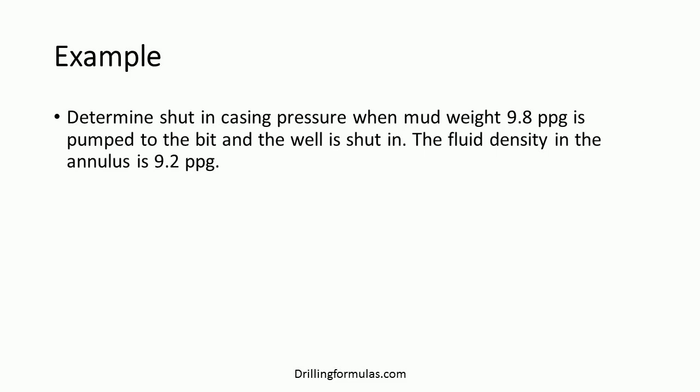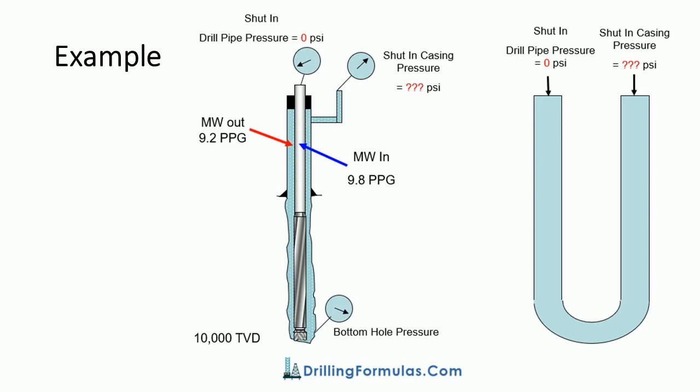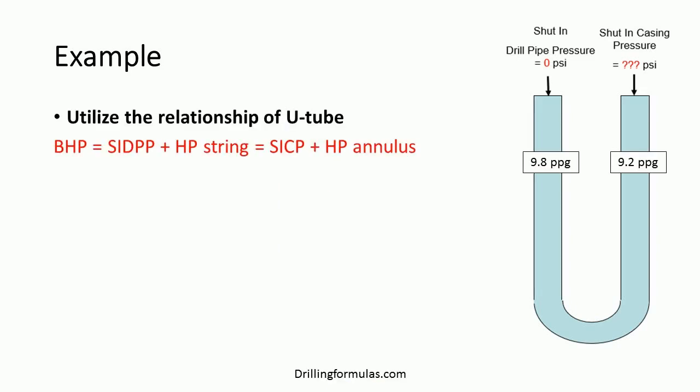True vertical depth at the bit is 10,000 feet. The well is in an overbalanced condition. This diagram illustrates this example. Let's utilize the U-tube relationship. Bottom hole pressure equals shut-in drill pipe pressure plus hydrostatic pressure in the drill string, and equals shut-in casing pressure plus hydrostatic pressure in the annulus.